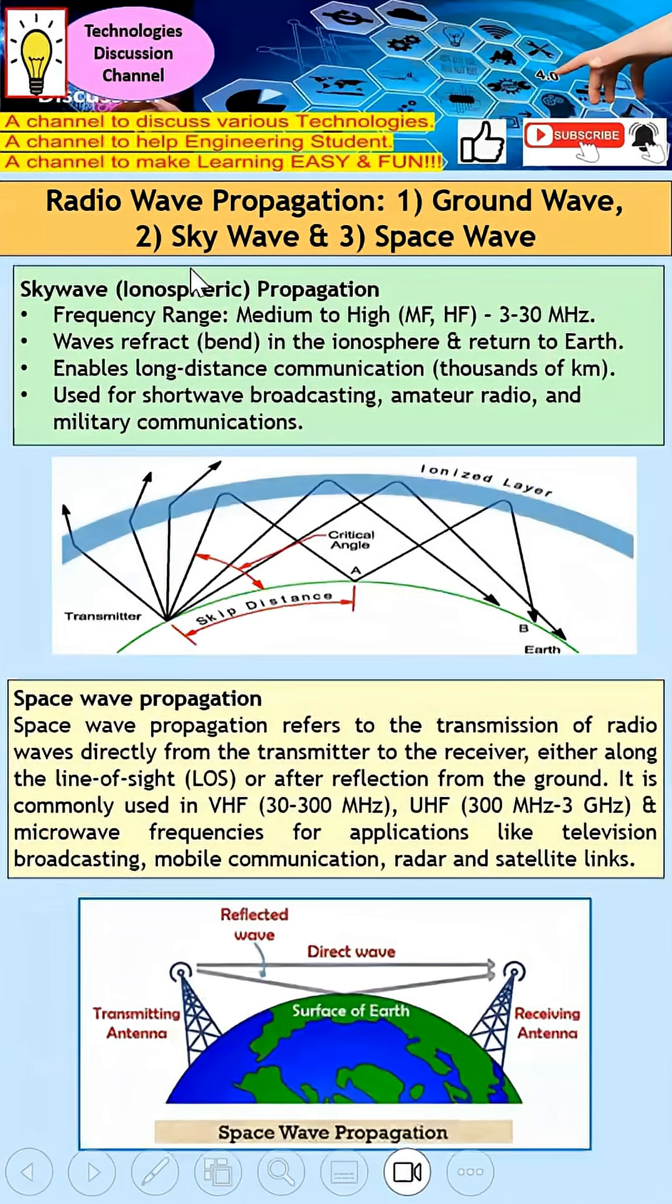Next is sky wave propagation. This type is used in medium to high frequency, from 3 to 30 megahertz. The key difference is that the wave is refracted when it hits the ionosphere and returns back to Earth. This enables long distance communication, even thousands of kilometers. It's used for shortwave broadcast and mainly for military communication.